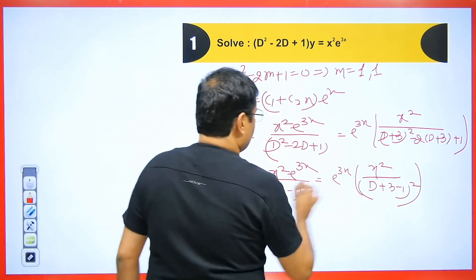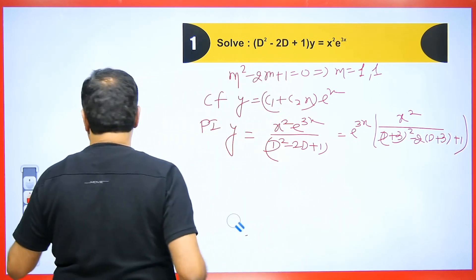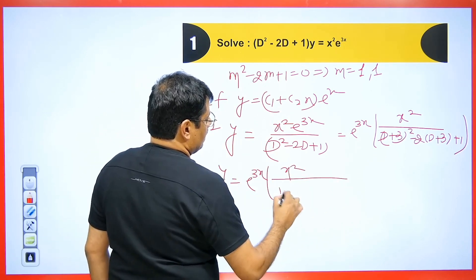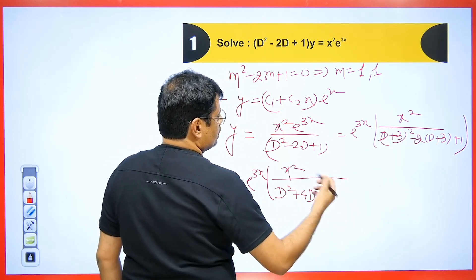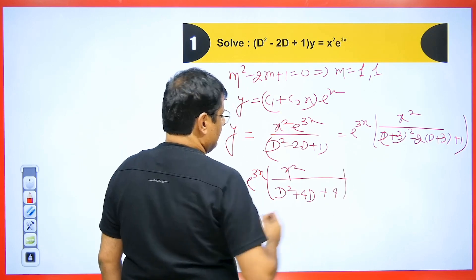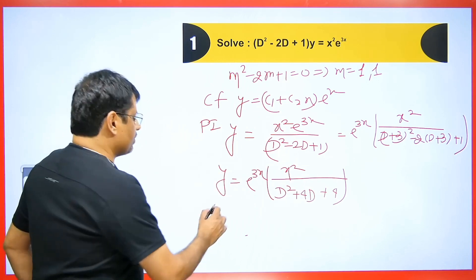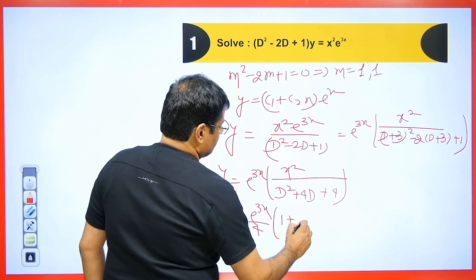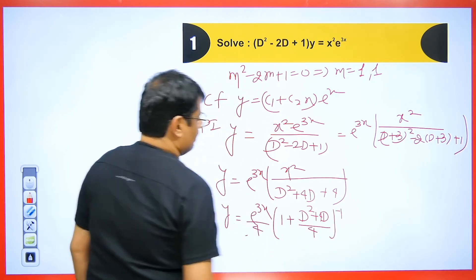You can do it as you like. Applying the same method: y equals e to the power 3x times x squared. This expression is simplified by expanding D squared plus 4D, and substituting back gives 9 minus 6, which is 3, plus 1, giving plus 4. Now we proceed to find the PI of x squared — take this 4 out. So y equals e to the power 3x divided by 4, times 1 plus the quantity D squared plus 4D divided by 4, then the inverse of it.